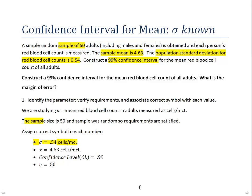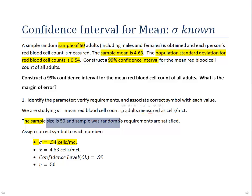Now let's begin the process to calculate a 99% confidence interval. When you start these problems, the first thing to do is identify the parameter. In this case, what we're studying is mu — the mean red blood cell count in adults. The sample size is 50 and the sample was random. We ask ourselves whether we've satisfied the requirements to use the technique from this section, which means satisfying the requirements for the central limit theorem. Either the sample size must be greater than 30, or the population must be normal. Since n=50 is well above 30, we can proceed.